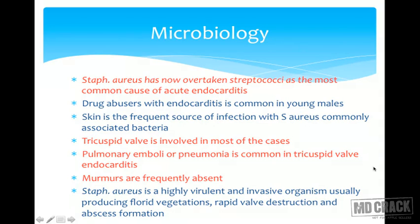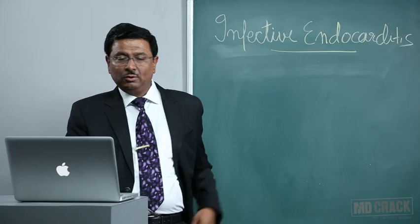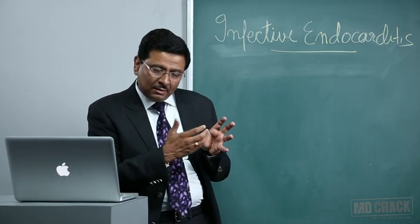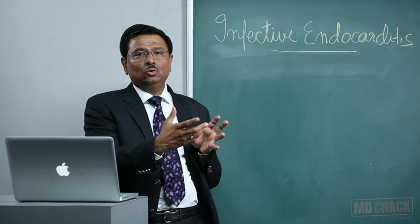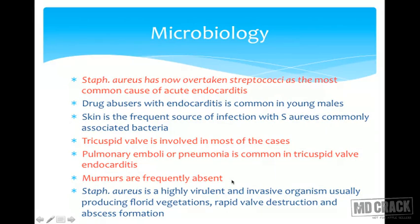The tricuspid valve is involved in most cases of IV drug abuser endocarditis — very important for MCQs. Pulmonary emboli or pneumonia are common in tricuspid valve endocarditis, as vegetations can travel forward leading to pulmonary embolism. Murmurs are frequently absent — a very characteristic feature in IV drug abusers with infective endocarditis. Staphylococcus aureus is highly virulent and invasive, usually producing florid vegetations leading to rapid valve destruction and abscess formation.